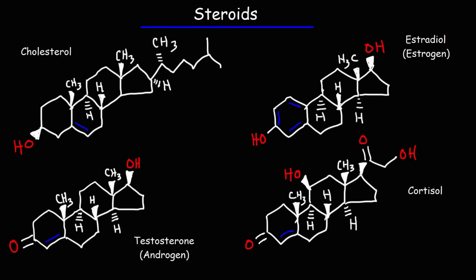Now the next category of lipids that we're going to talk about are steroids. Steroids contain four fused rings. As you can see in the examples listed on the screen. Now the first one that we're going to talk about is cholesterol. Cholesterol is used to maintain the fluidity of the cell membrane.